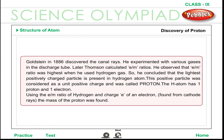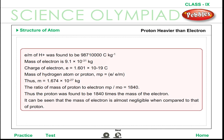This positive particle was considered as a unit positive charge and was called the proton. The hydrogen atom has one proton and one electron. Using the E/M ratio of hydrogen and the charge E of an electron found from cathode rays, the mass of the proton was found. The proton is 1840 times heavier than an electron — the ratio of mass of proton to electron, Mp/Me, equals 1840. It can be seen that the mass of the electron is almost negligible when compared to that of the proton.